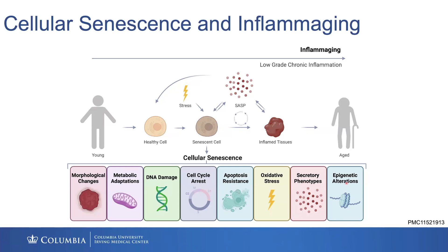I will caution people that senescent cells aren't a monolith — they're really heterogeneous. There's quite a mixture and there's no universal cellular senescence marker, so it takes a lot of work to define what a senescent cell is. Where they're really damaging is that secretory phenotype.